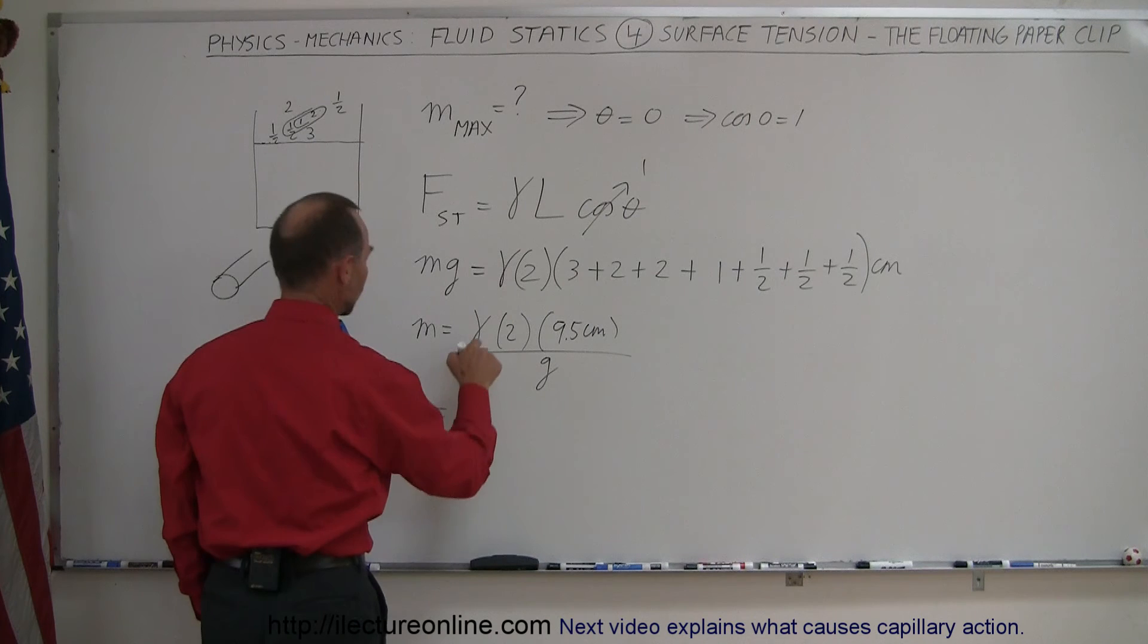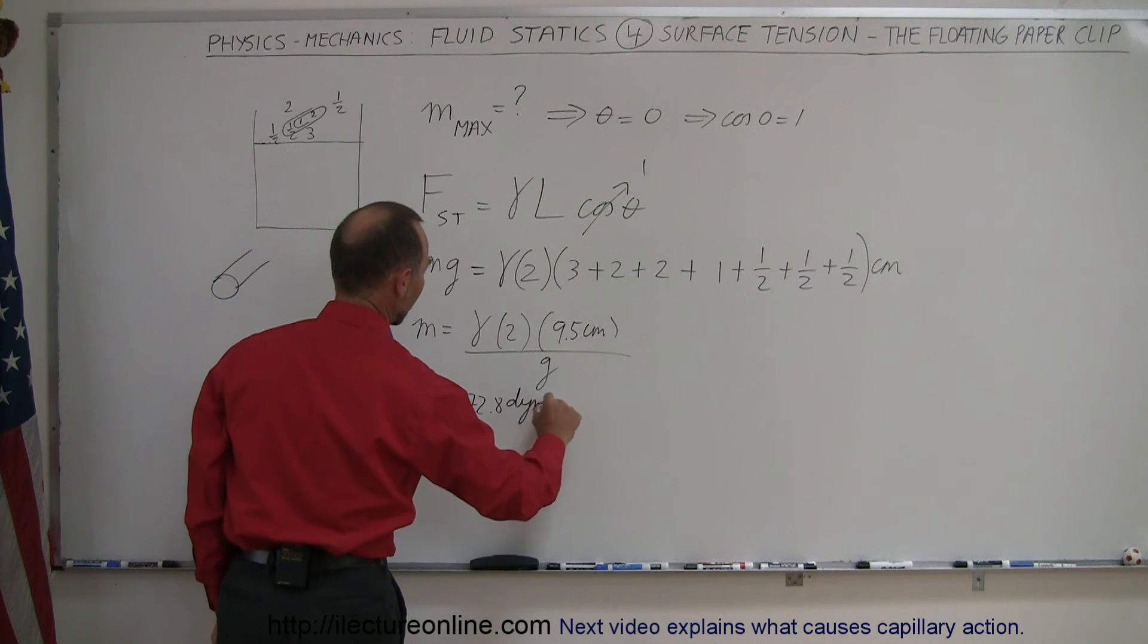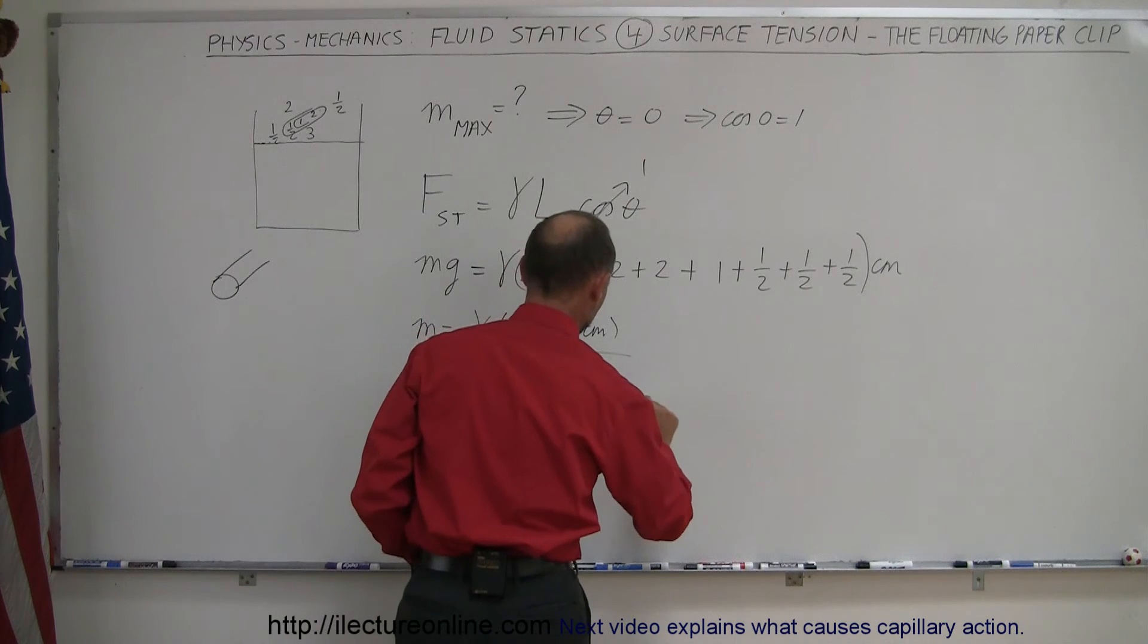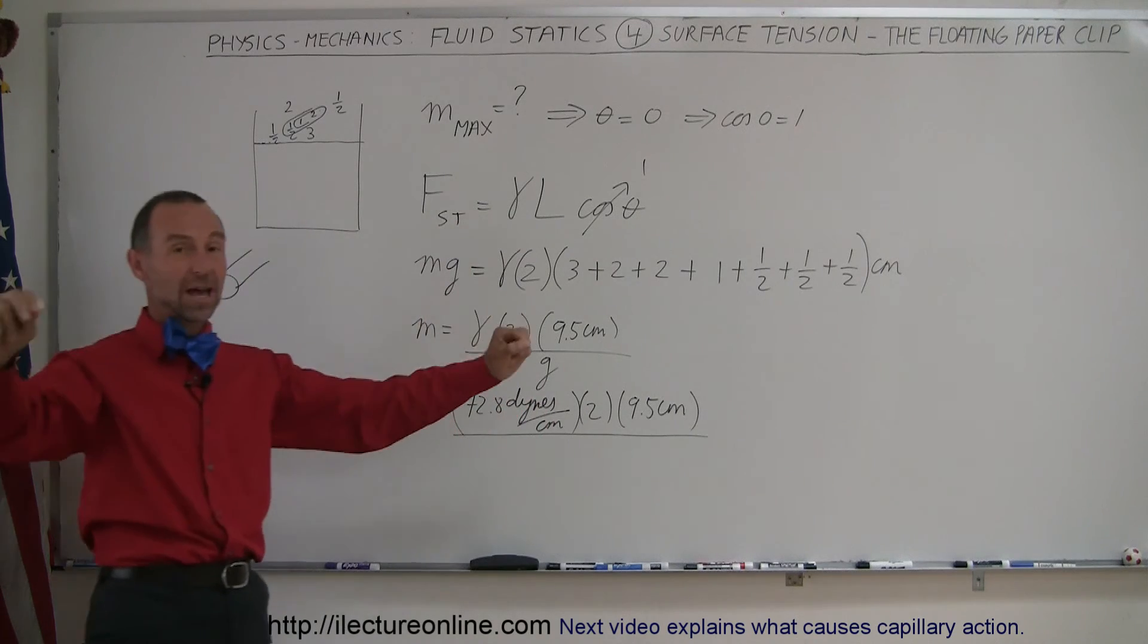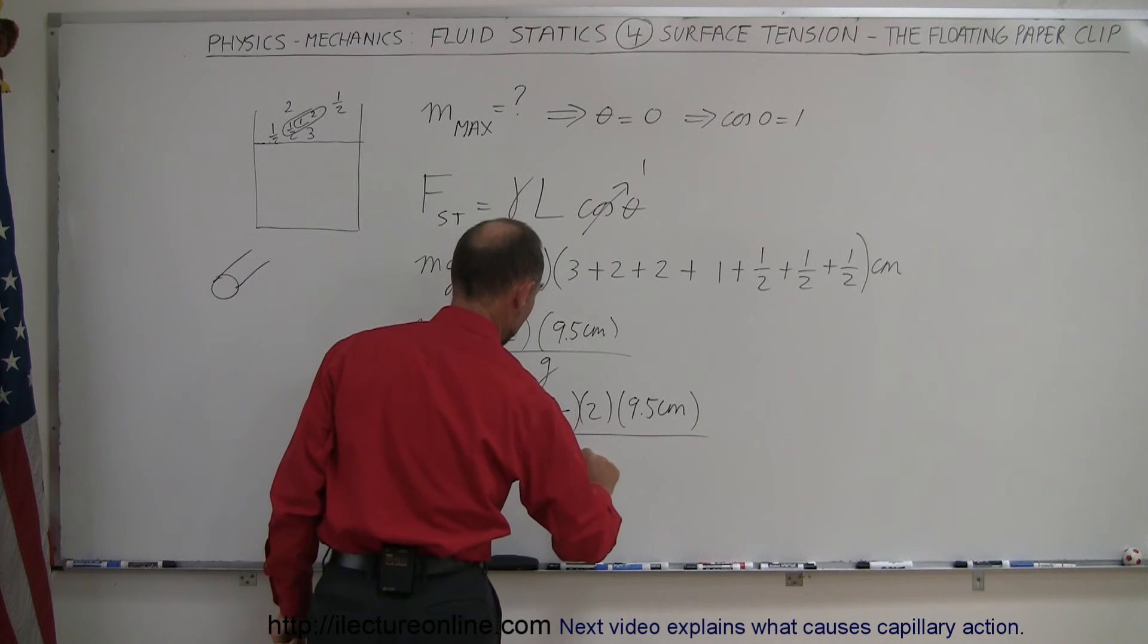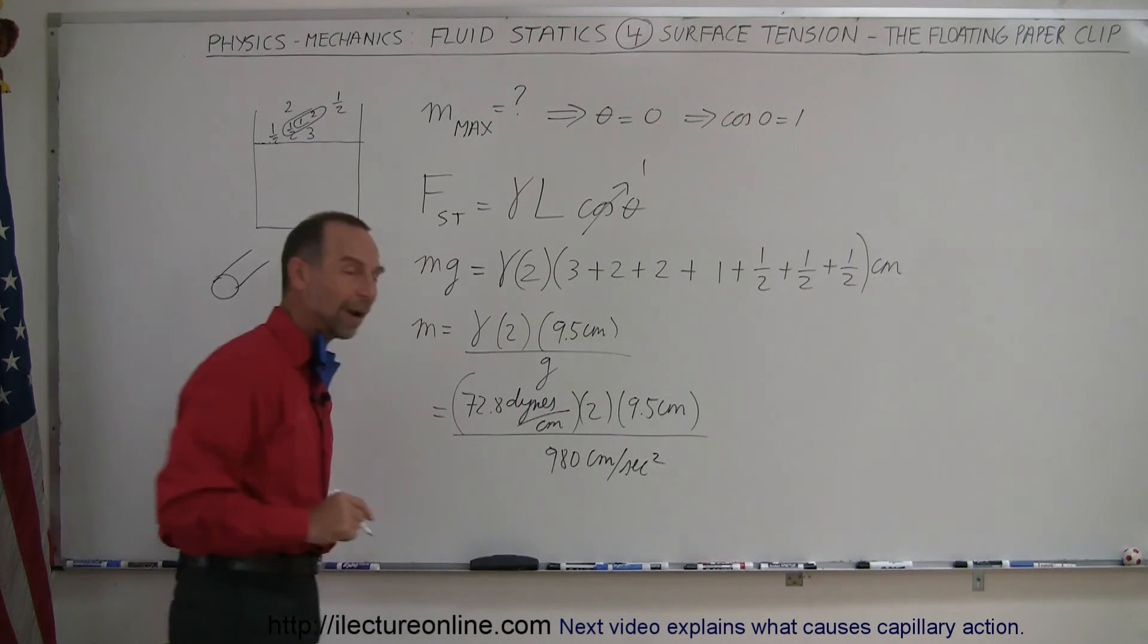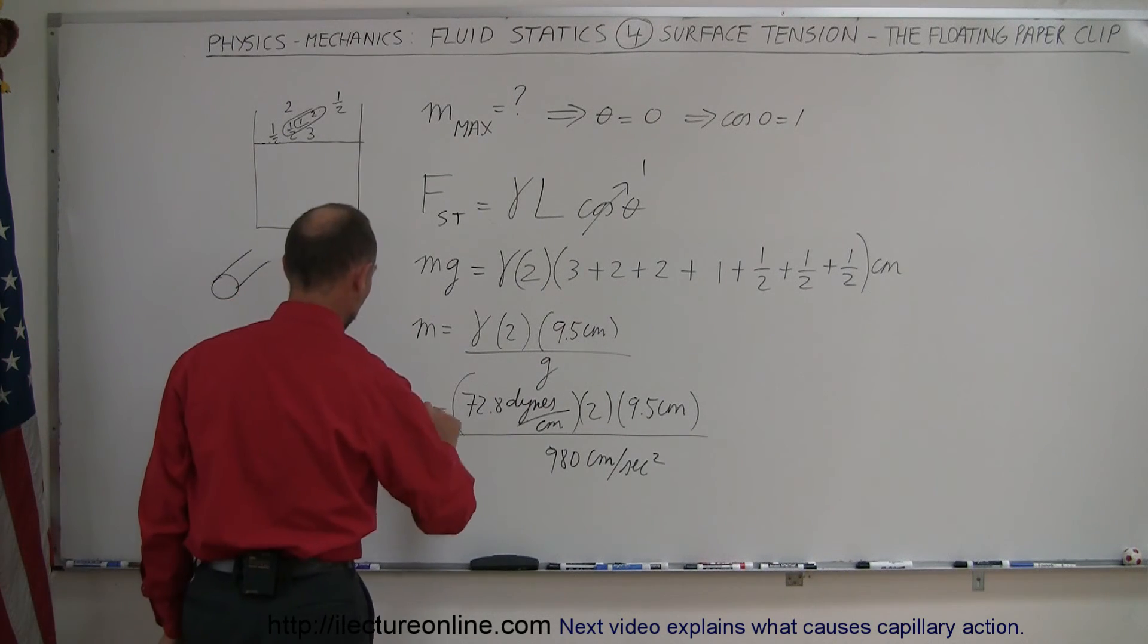So the total mass is equal to gamma would be 72.8 dynes per centimeter times two, because we have to account for both sides, times 9.5 centimeters, total length of a paper clip. If you took a paper clip and stretched it all out, you'd have a total length of 9.5 centimeters, and divide by 980, that would be centimeters per second squared, that's acceleration due to gravity in CGS units.